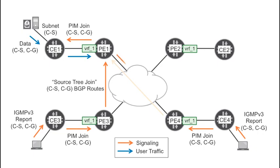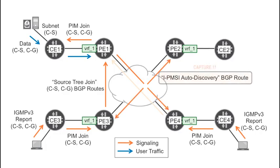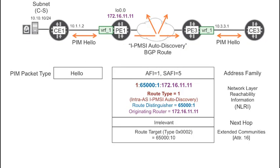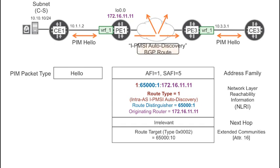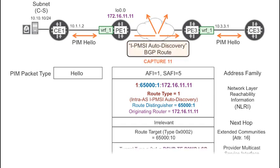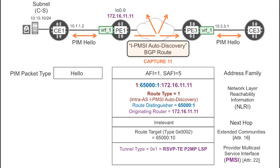As soon as you configure PE1 to be the head end of a P-tunnel associated to VRF1, the auto-discovery BGP route is modified with a new attribute. This new attribute is called PMSI, or Provider Multicast Service Interface.